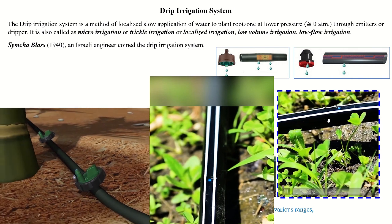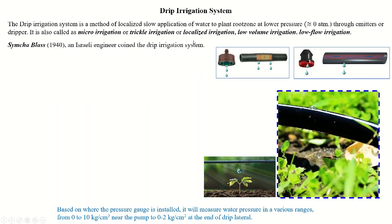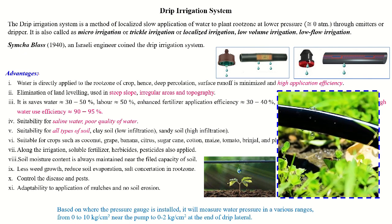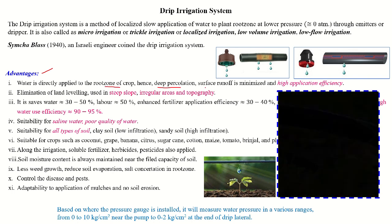The water comes through laterals drop by drop. It is also called micro irrigation, trickle irrigation, localized irrigation, low volume irrigation, or low flow irrigation, because we control the flow of irrigation. In the 1940s, Simcha Blass, an Israeli engineer, coined this drip irrigation system. The major advantage is that water is directly applied to the root zone of the crop, hence deep percolation and surface runoff are minimized, giving higher application efficiency.